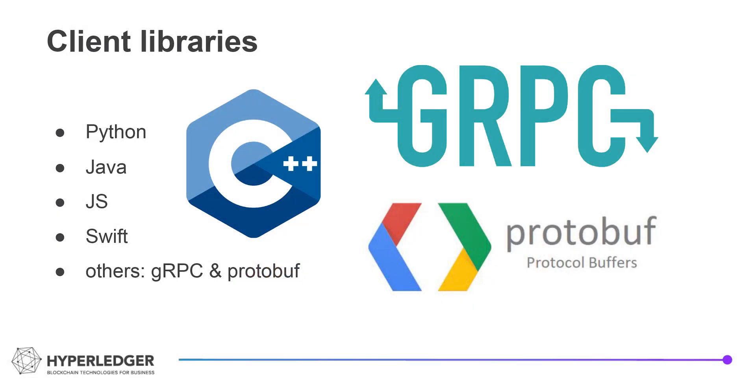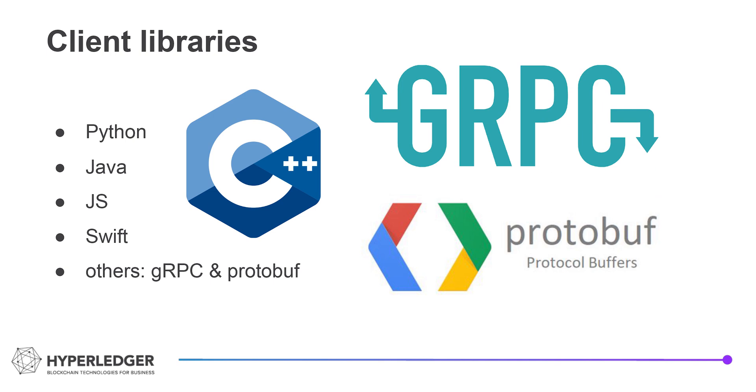Iroha itself is written in C++, which makes it fast and efficient. But if your application uses another language, there are great native libraries in Python, JavaScript, Java, and Swift. This list can be further extended because our client interface is written on Google Protobuf and gRPC, which provides frameworks for easy code generation.